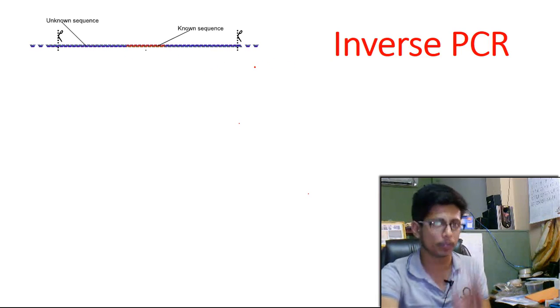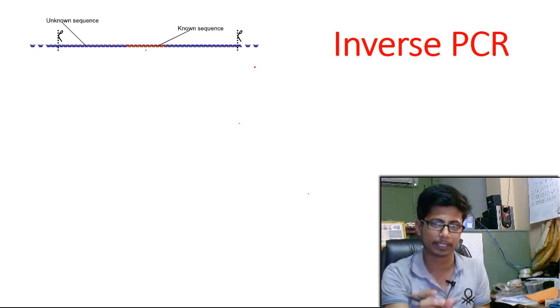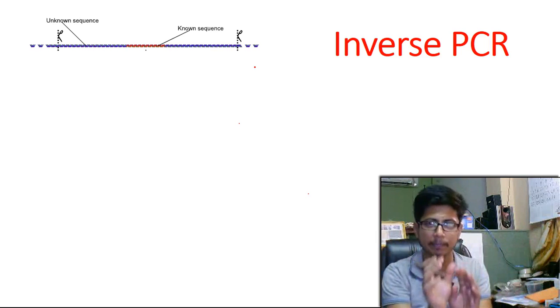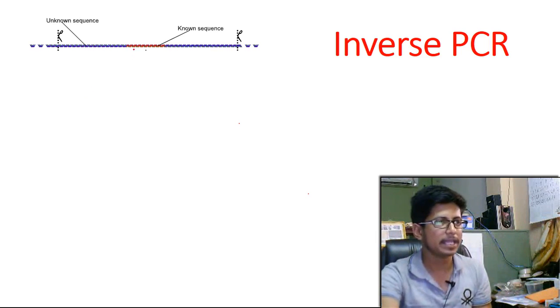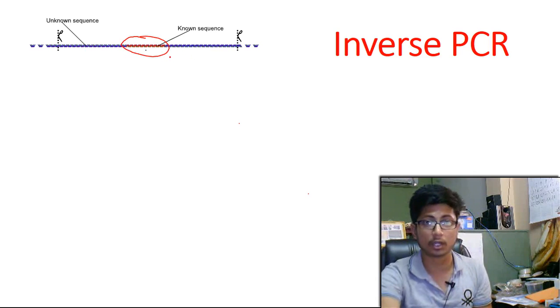Now for inverse PCR to work we need to know at least some part of the DNA content even if it's in the side regions or in the inside middle region of the target DNA. Now let's say here this part which is colored red here, this is the portion, this sequence is known to us. Rest of the sequences are not known.